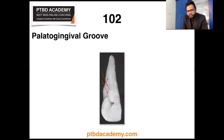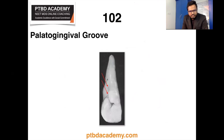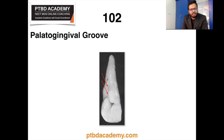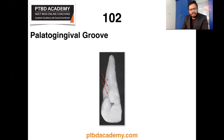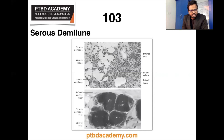Moving on — palatogingival groove, also called palatoradicular groove. This groove is on the distal aspect. Presence of palatogingival groove, especially in maxillary incisors, may be a predisposing factor in localized periodontal disease as given in Pells and also Carranza. As you can see, it extends from the crown towards the root distally. There also seems to be another image-based question related to serous demilunes — see if this information helps you in answering your query.